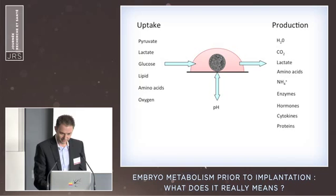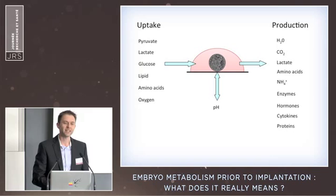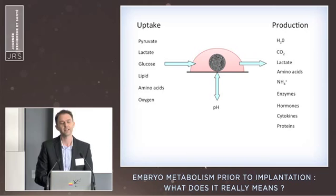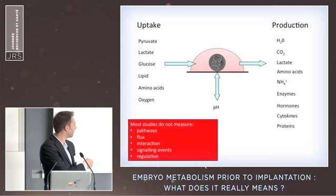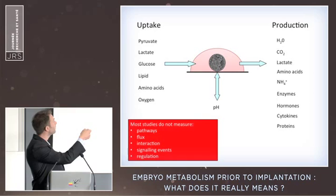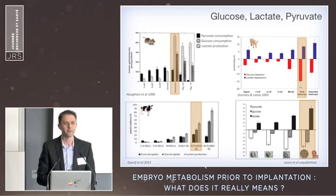We measure pyruvate, lactate, and glucose, and look at the appearance of compounds too. The clearest indication of metabolism is that change in culture media — if you use phenol red indicator and it goes slightly yellow as you culture cells, that's metabolism, that's the production of lactate. Most metabolic studies do not study pathway specifically or metabolic flux; we generally study the disappearance of a compound or the appearance of a metabolite, filling in the gap using knowledge of biochemical pathways.